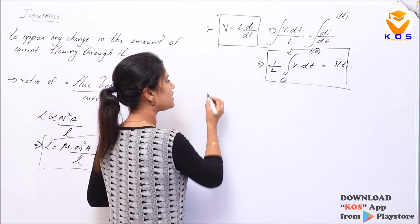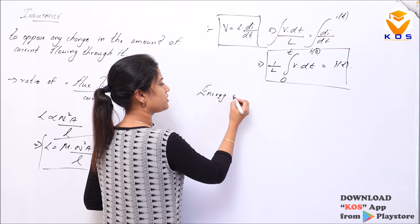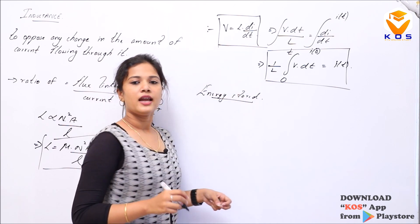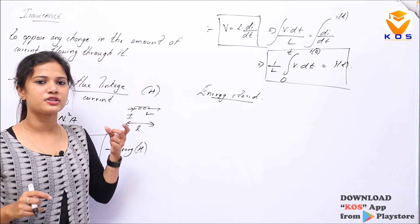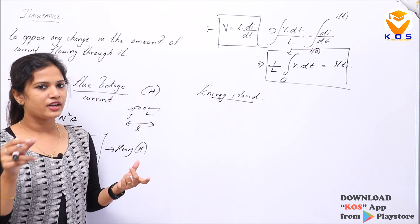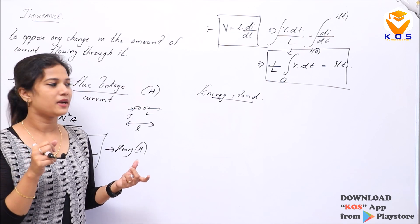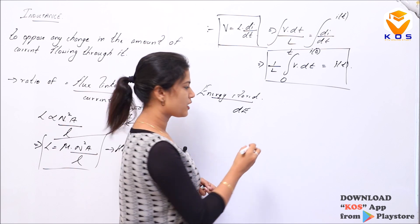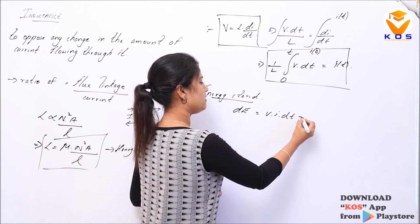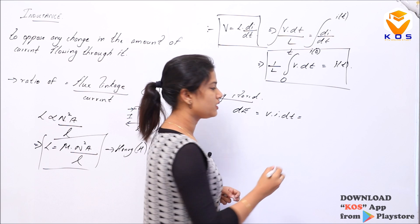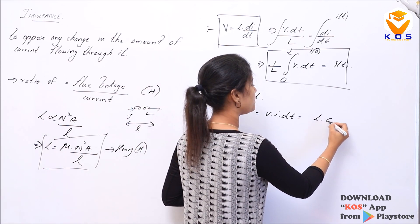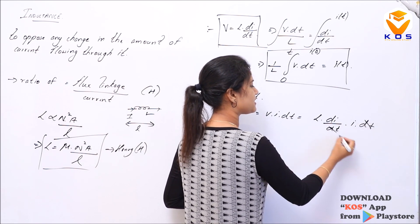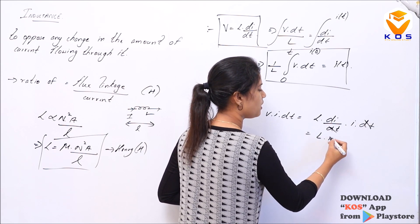We need the energy stored in an inductor. If we apply voltage to the inductor for a differential time DT, the differential energy supplied to the inductor is DE equals V times I times DT. Substituting V equals L times di/dt, this becomes L times I times DI, since DT cancels out.